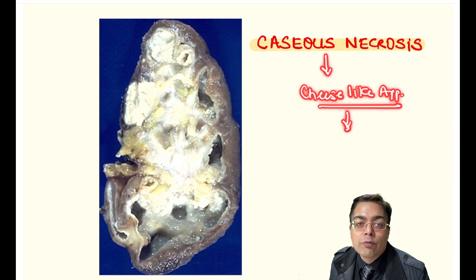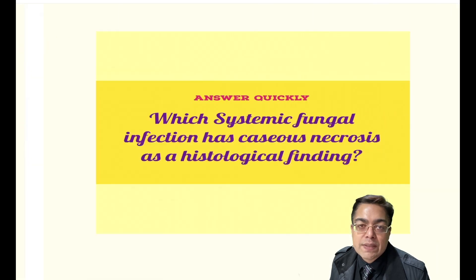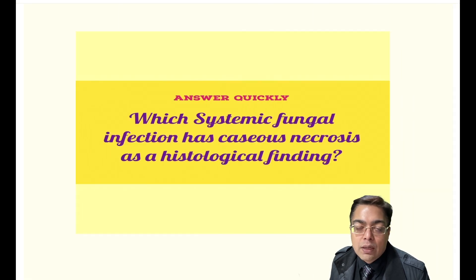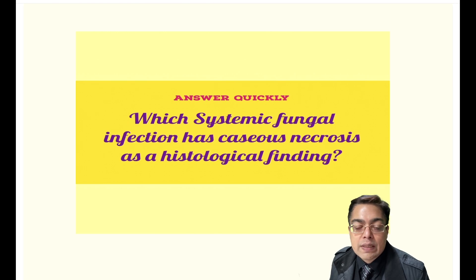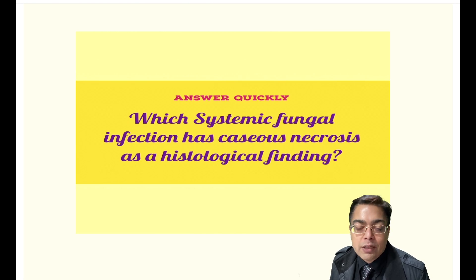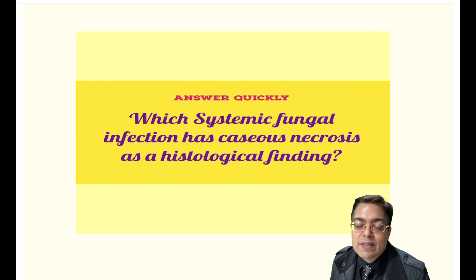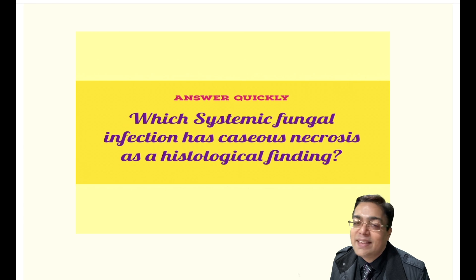Now what you have to answer for me is a simple question. Write your answer in the chat box: give an example of a systemic fungal infection which also shows the presence of caseous necrosis as a histological finding. The hint for you — Darling's disease.